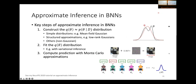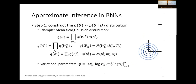The variational inference framework has three steps: define a parametric family of Q distribution, find the best approximation using the ELBO objective, then compute the predictive distribution with Monte Carlo. Now let's talk in more detail about how we actually implement mean field variational inference.